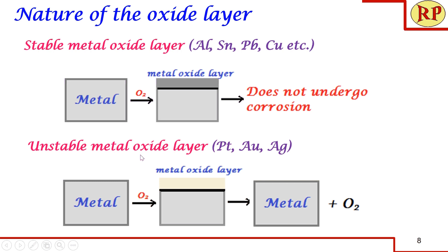Next comes the unstable metal oxide layer. When the metal comes in contact with oxygen in the atmosphere, it forms a very unstable metal oxide layer that immediately returns back to form metal and oxygen — we almost do not even know whether a metal oxide layer has formed or not. This happens in noble metals like gold, silver, and platinum. That is why even after 40 or 50 years, gold does not undergo corrosion.